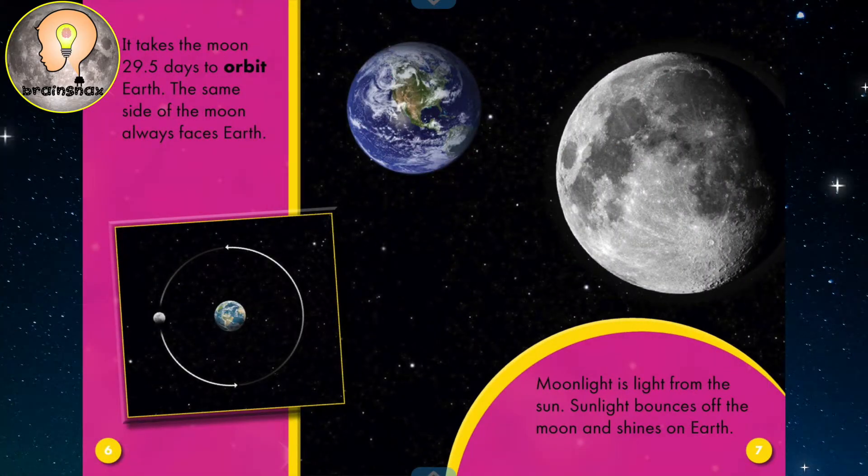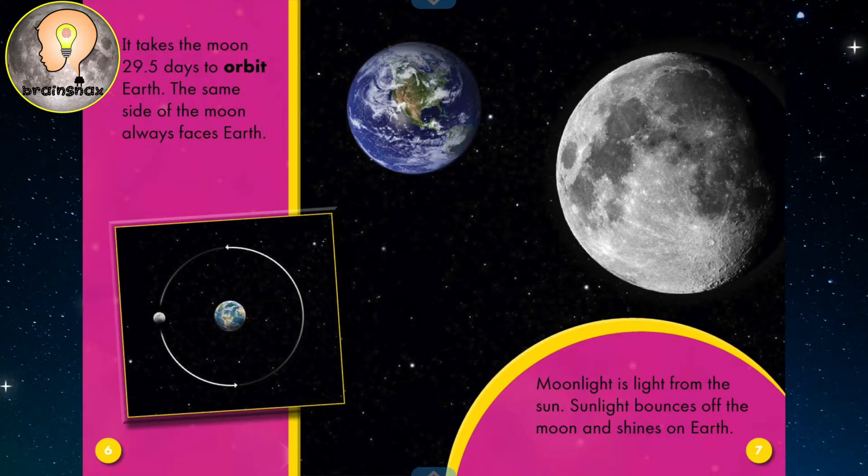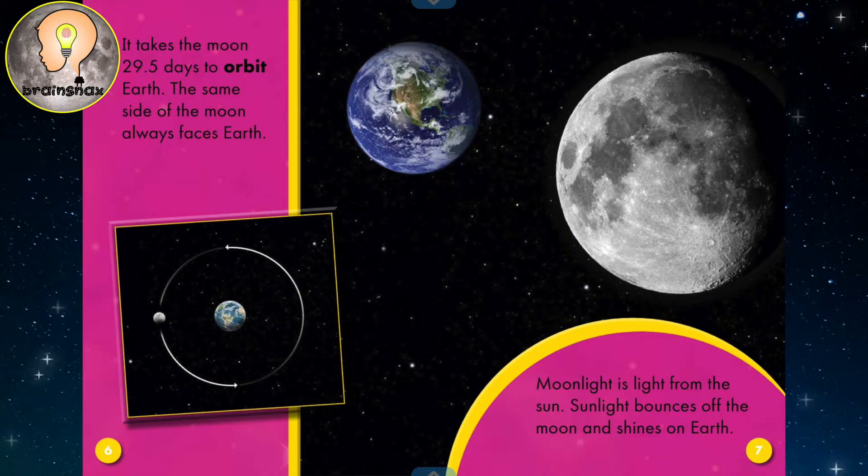It takes the moon 29.5 days to orbit Earth. The same side of the moon always faces Earth. Orbit means to go around. So the moon orbits the Earth, and the Earth orbits the sun.